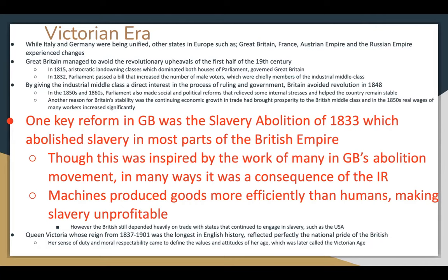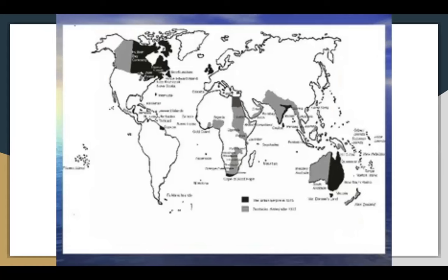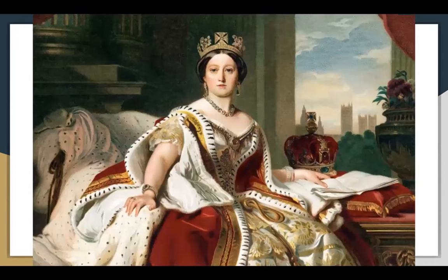One key reform was the Slavery Abolition Act of 1833, which abolished slavery in most parts of the British Empire. Inspired by Britain's abolition movement, it was also a consequence of the industrial revolution — machines produced goods more efficiently than humans, making slavery unprofitable. However, the British still depended heavily on trade with states that continued to engage in slavery, such as the United States. Queen Victoria, whose reign from 1837 to 1901 was the longest in English history, perfectly reflected the national pride of the British. Her sense of duty and moral respectability defined what was later called the Victorian Age.